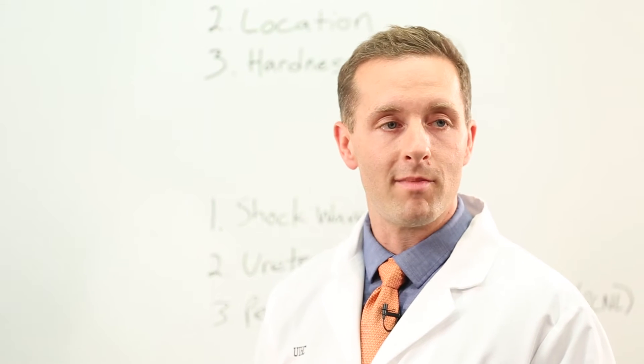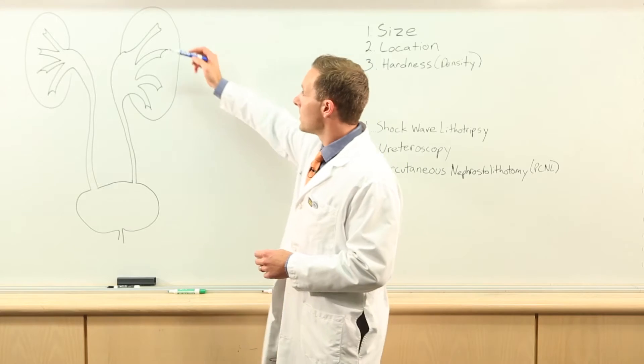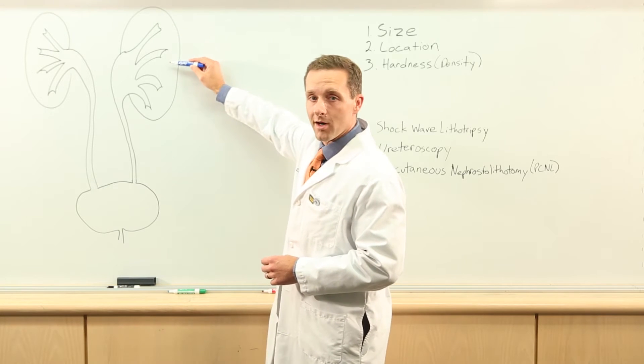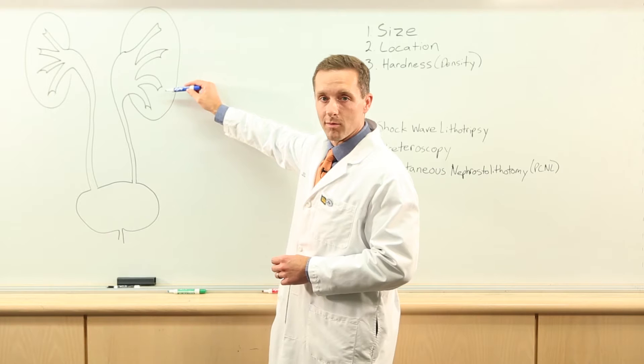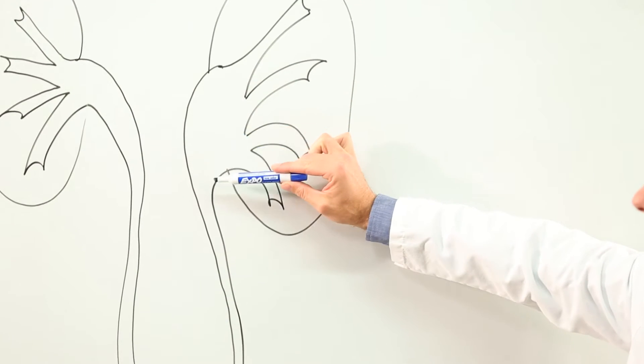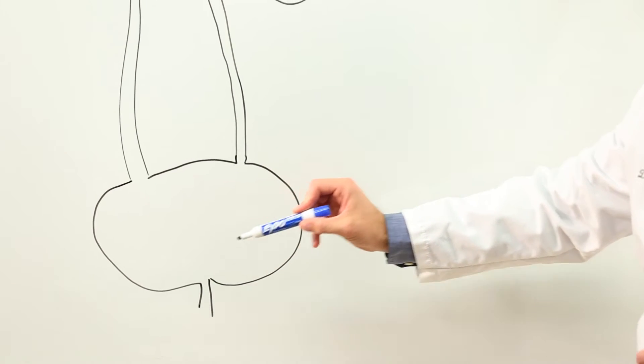Before we talk about the treatment of stones, I want to talk about the basic anatomy of the kidney. The kidney has two parts. It has this hard part out here which is responsible for filtering your blood. It then makes urine which drains down this funnel called the ureter to the bladder and then finally out the urethra.